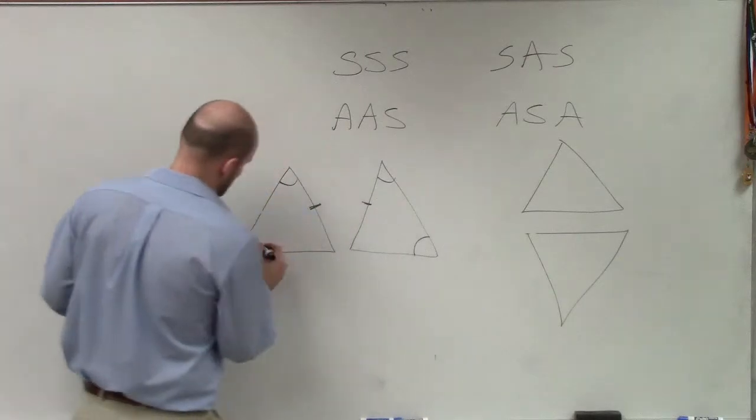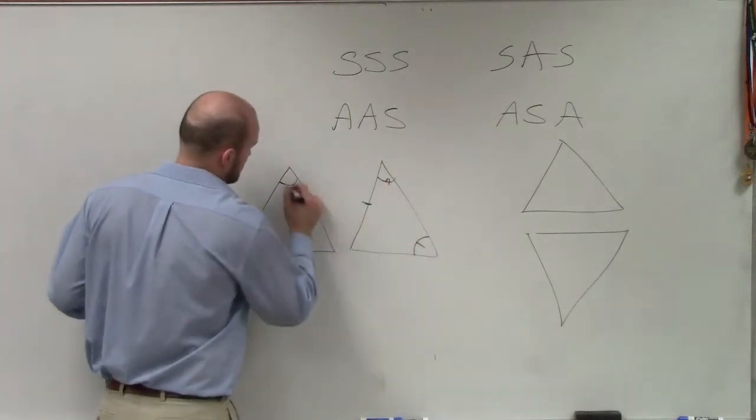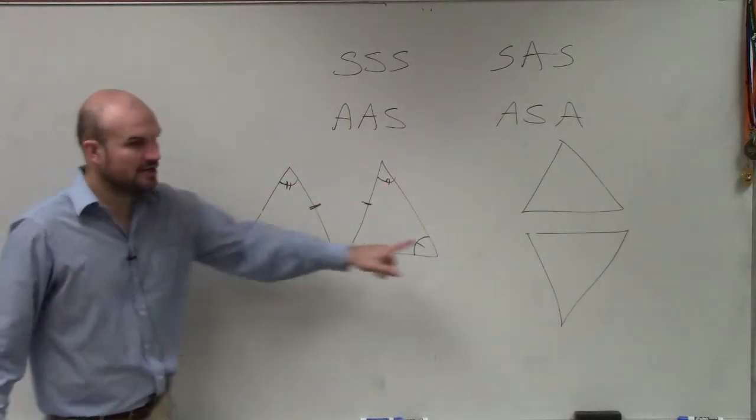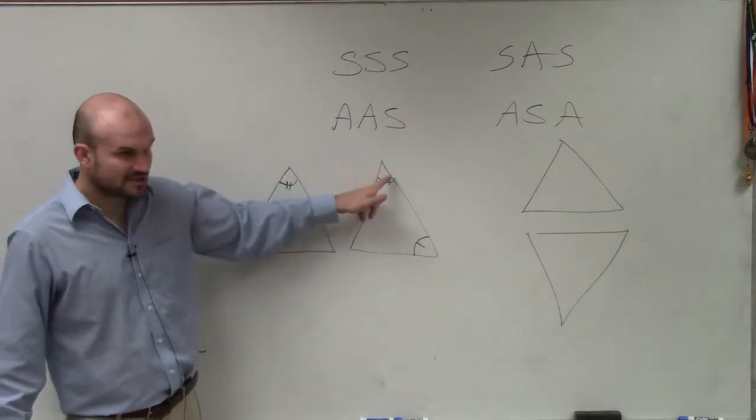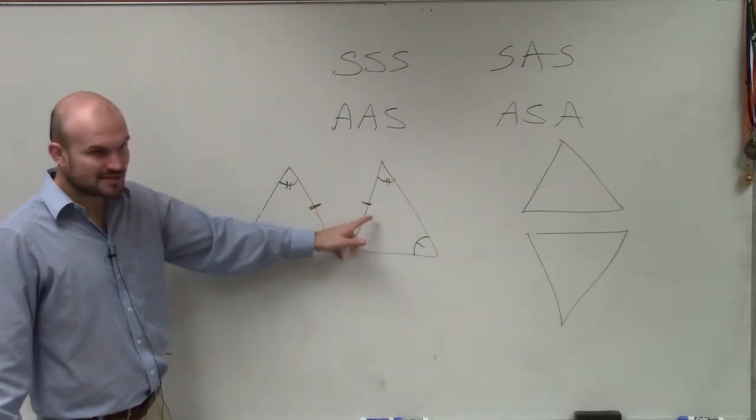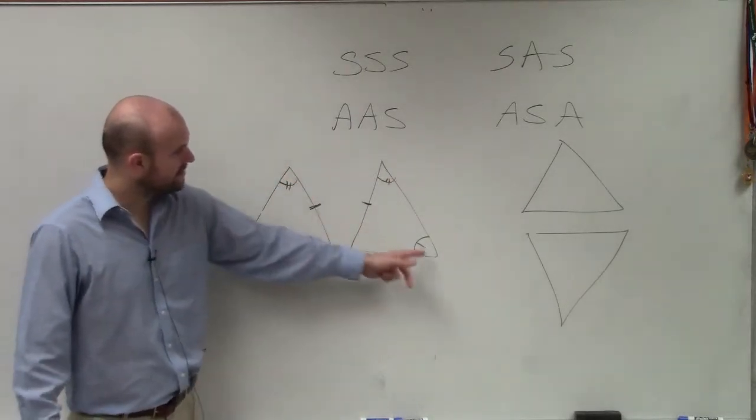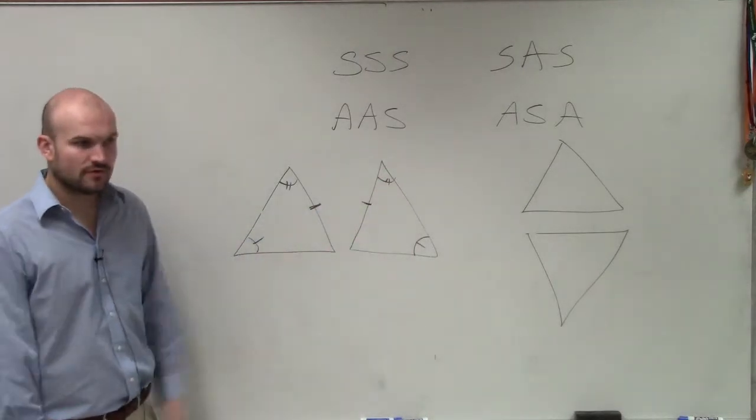These two angles, these two angles are the same. These two angles are the same. And then these two sides are the same. So I have angle, angle, side, angle, angle, side. Therefore, they're proved congruent.